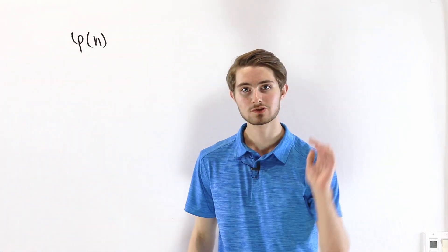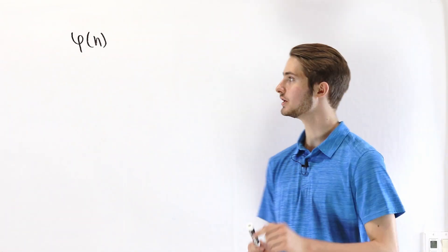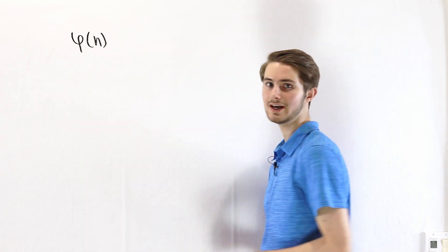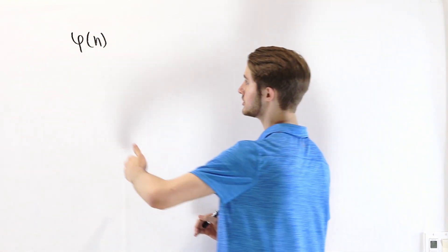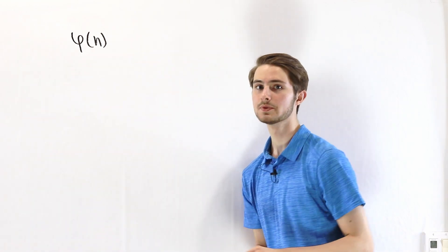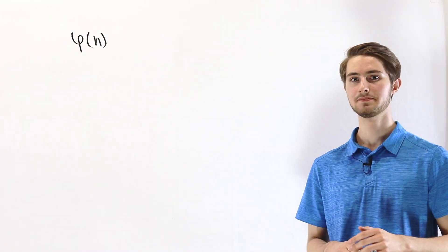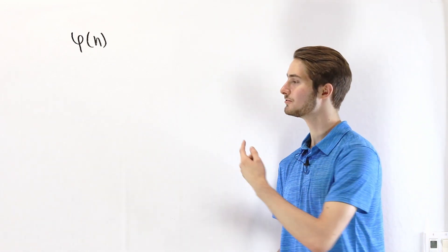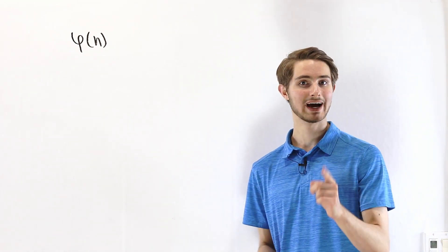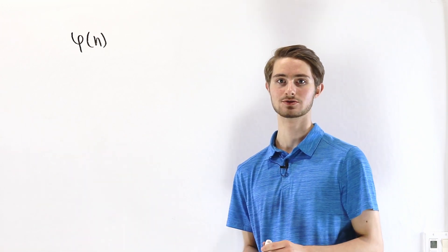So we are going to derive an explicit formula for Euler's totient function phi of n. Now Euler's totient function measures the number of integers between 1 and n that are co-prime to n, and at first it might seem like, how would we even get an explicit formula for that kind of function? But there actually is a very interesting closed form.